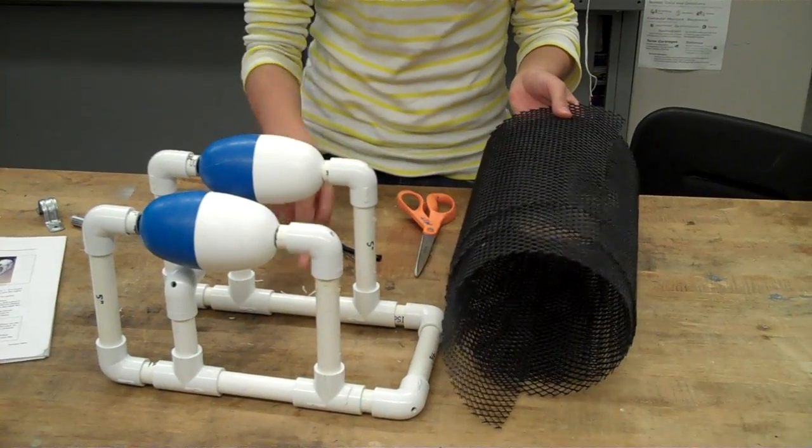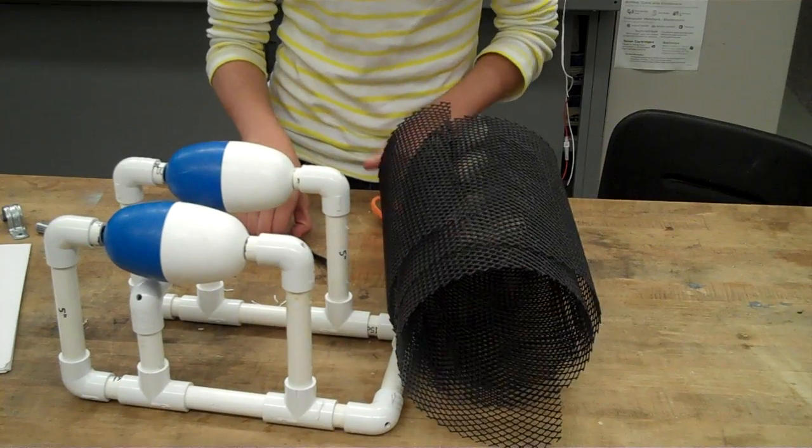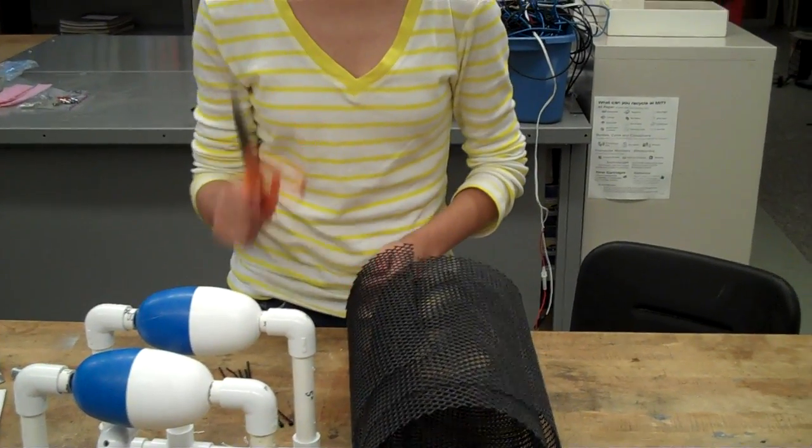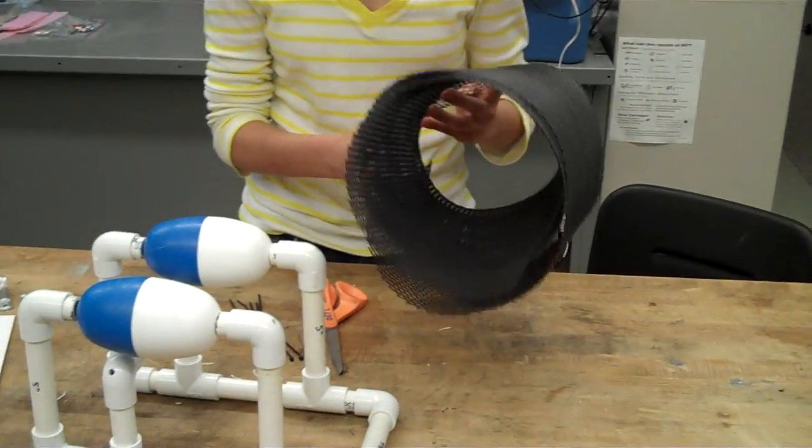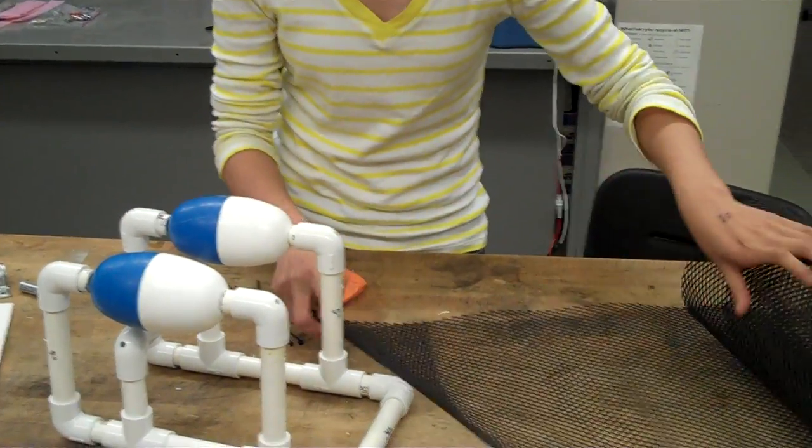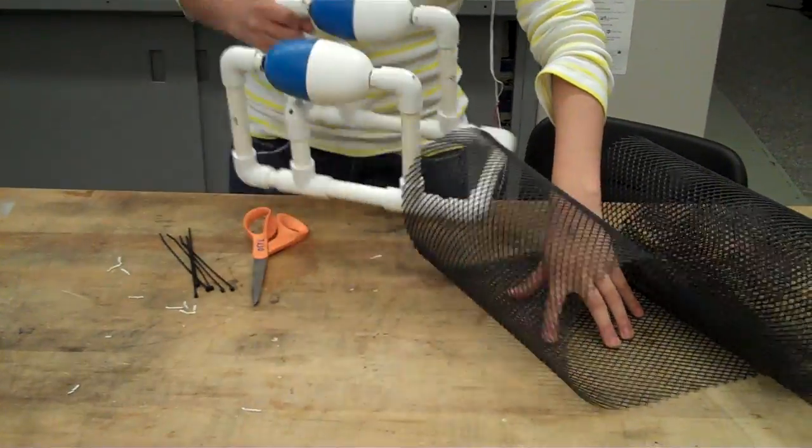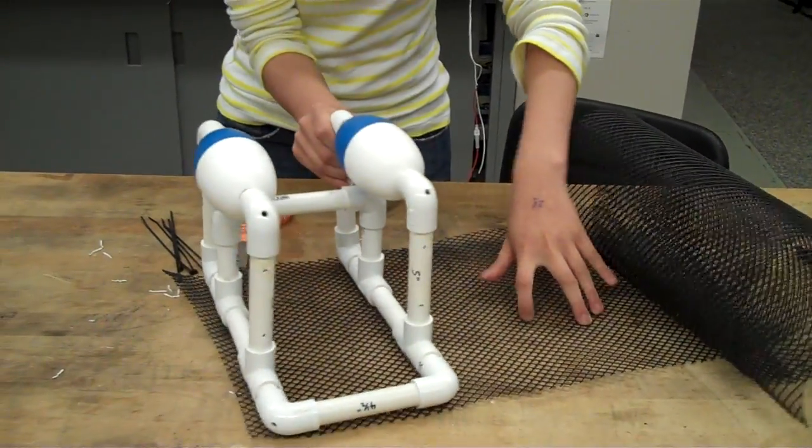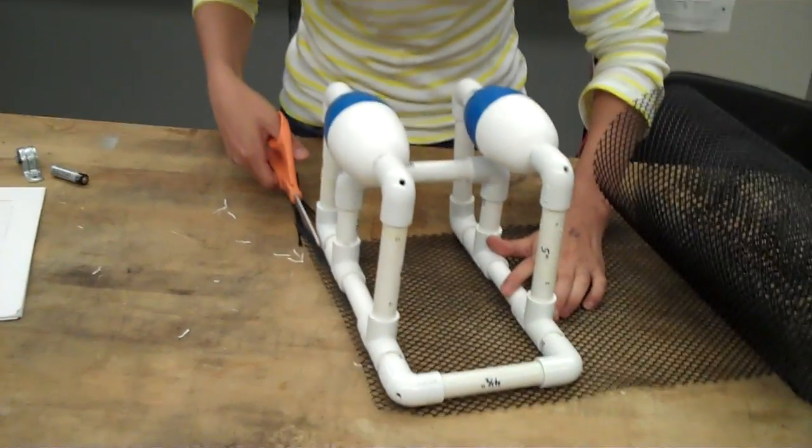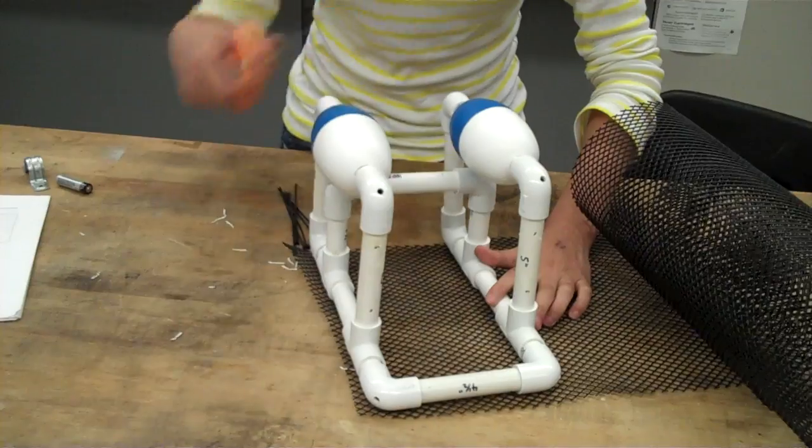Next we're going to add mesh to the bottom of the seat perch. For this step we'll need some twisty ties, scissors, and the mesh. First we're going to unwind a bit of this and place the seat perch on top. We're going to use scissors and cut around the edge to trace the edge of the seat perch.